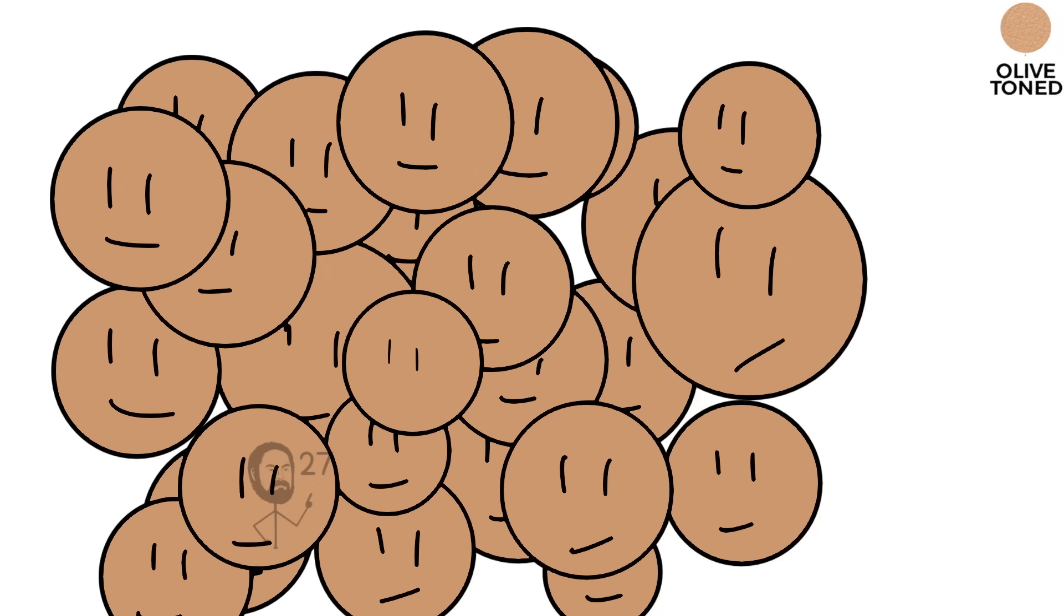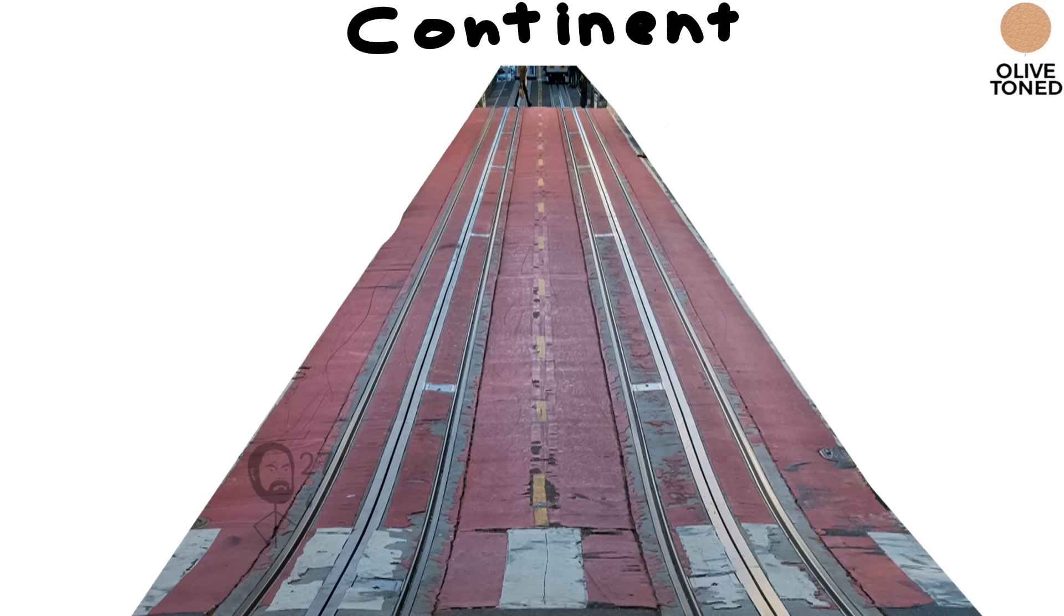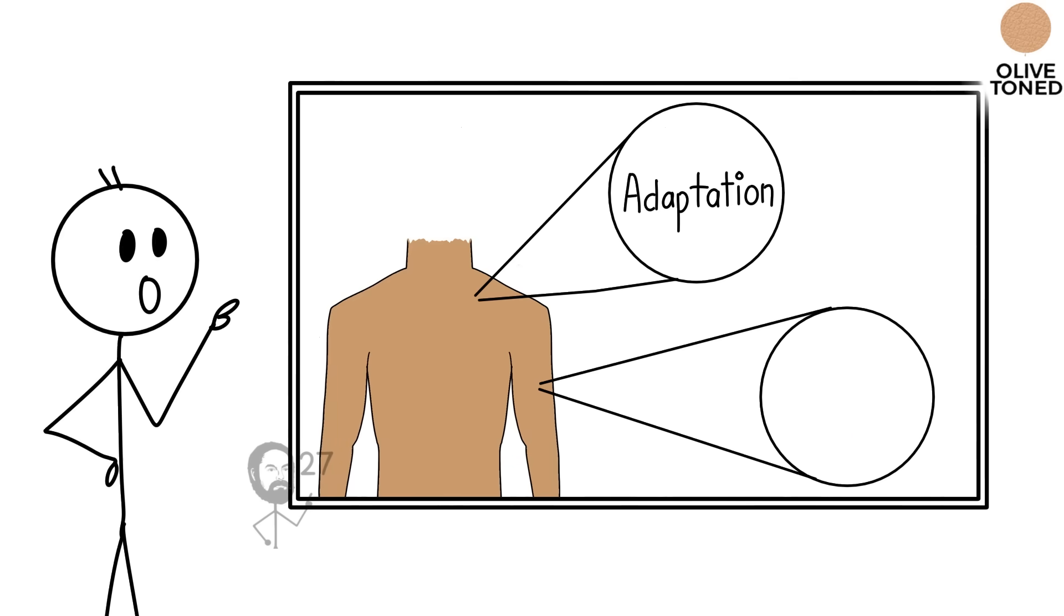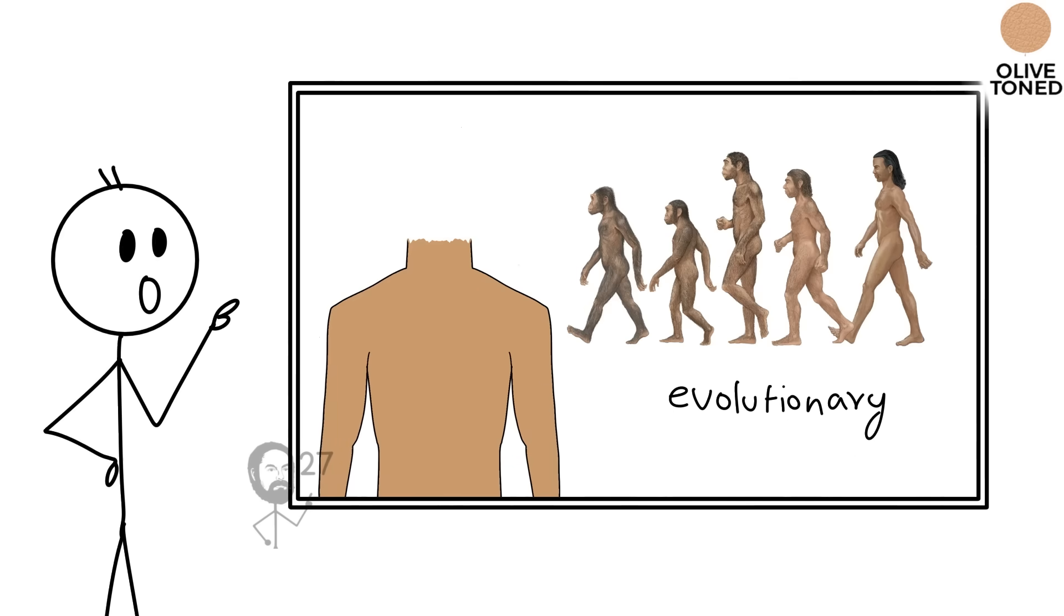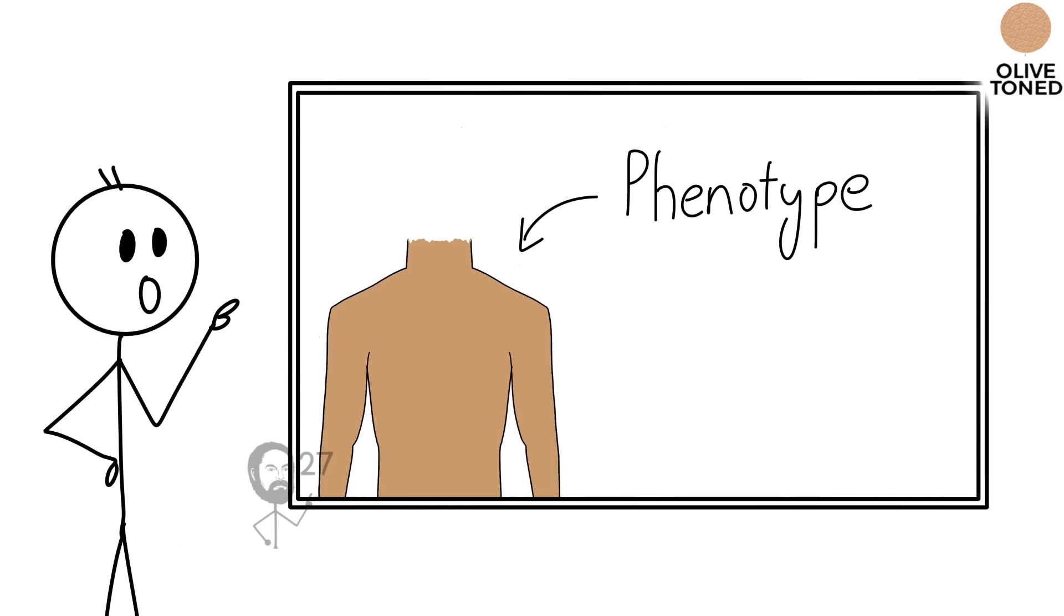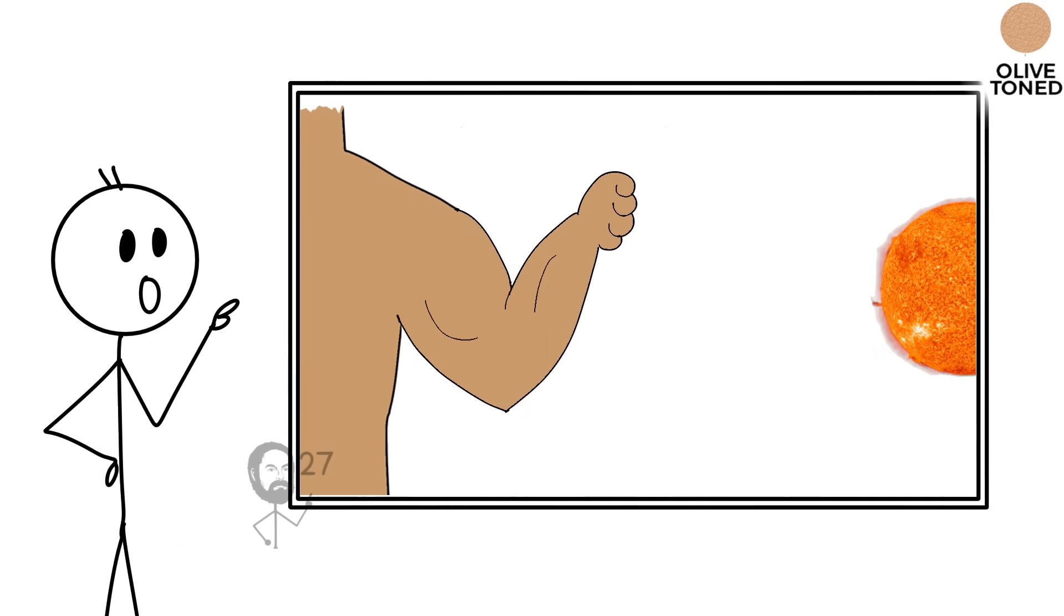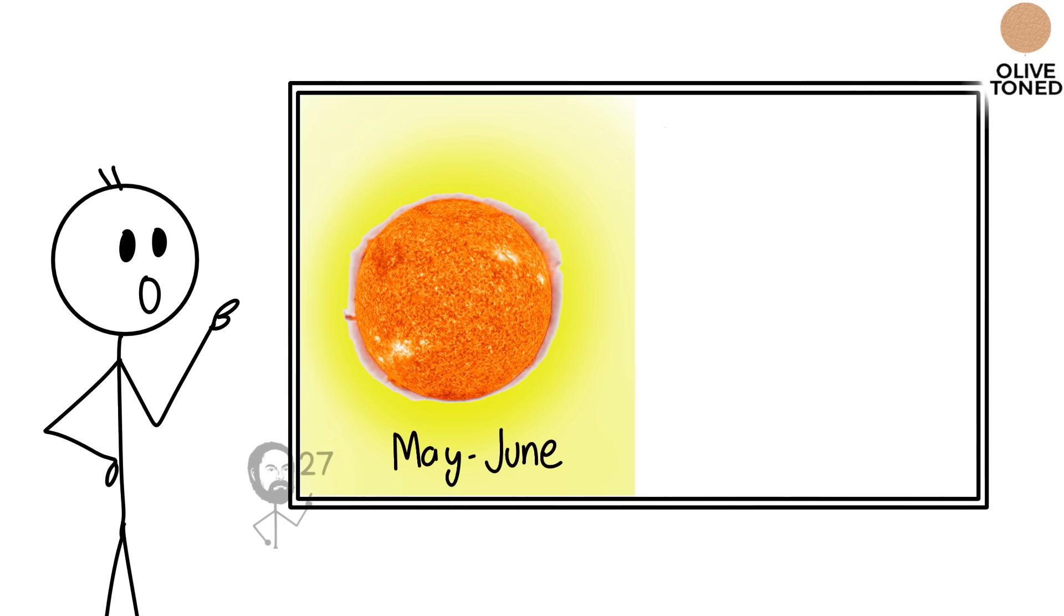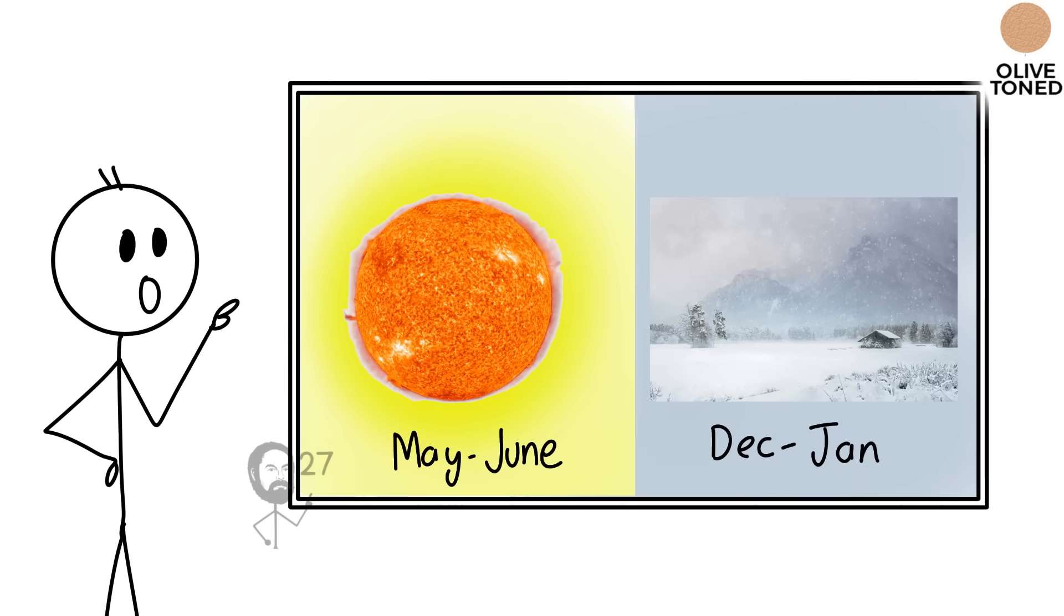Evolutionarily, the olive phenotype is a model of flexibility, robust enough to resist solar damage, yet optimized for survival in transitional climates, where extremes of sun and cold alternate over the year.